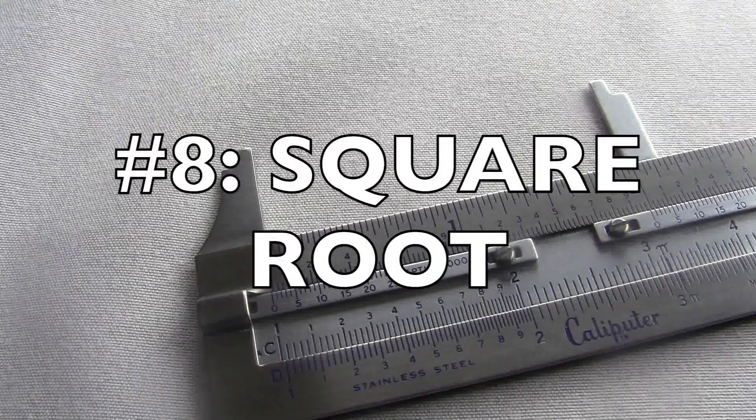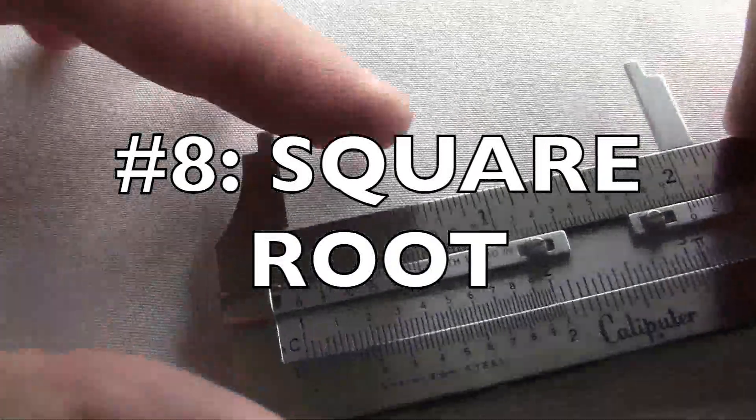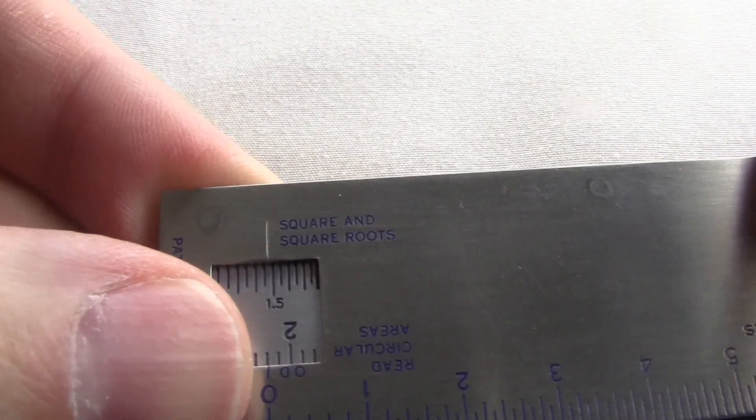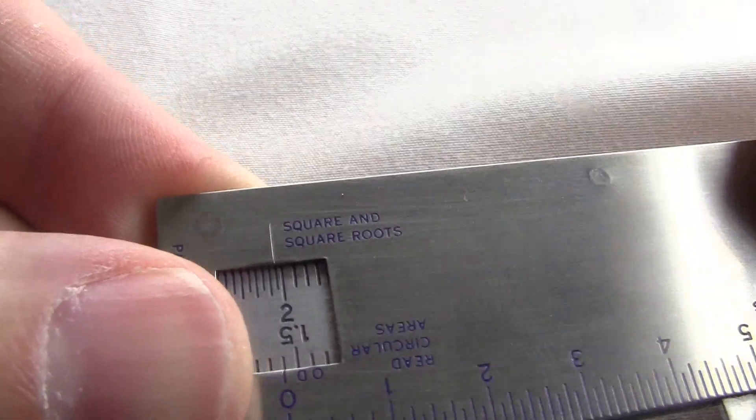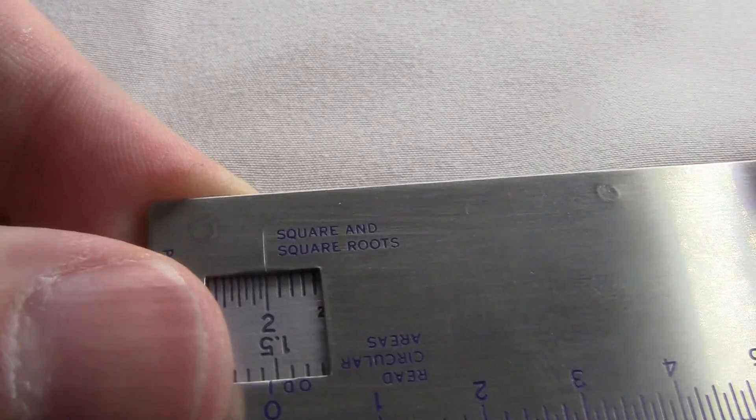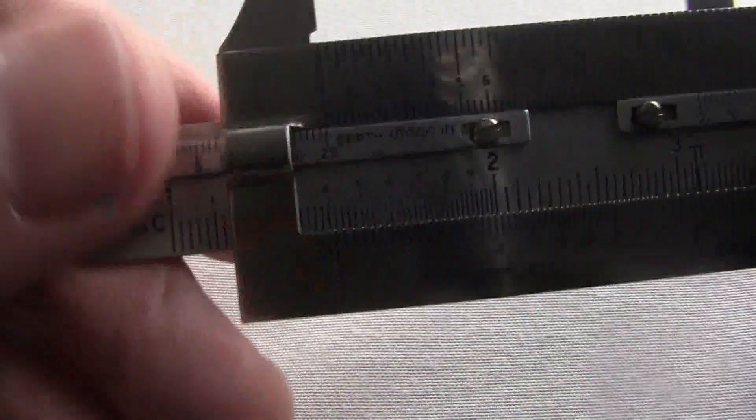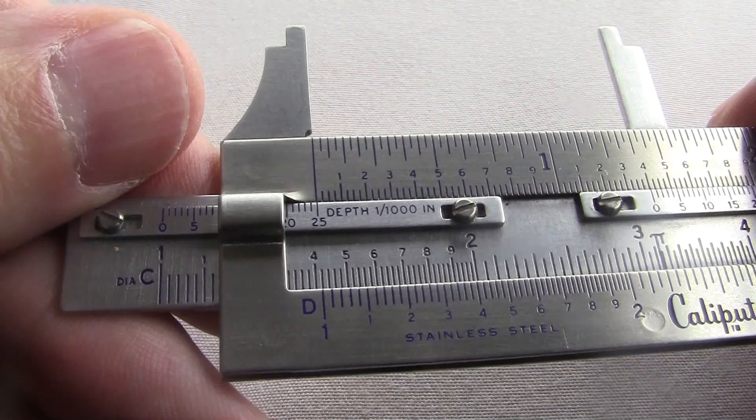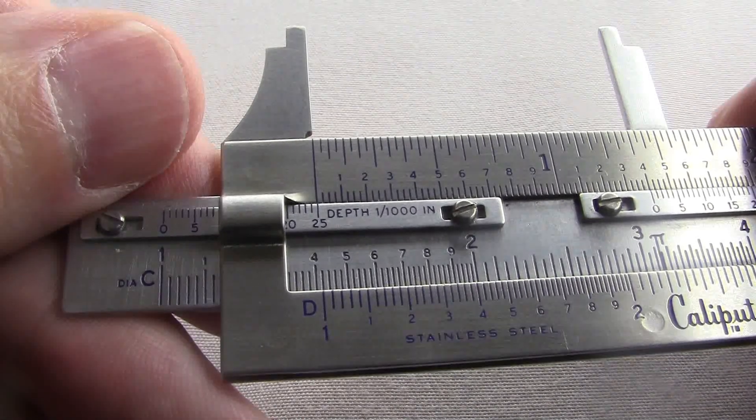Number eight, the square root. For a square root, you just reverse the process like to do the square root of 2. I find a 2 in the square window back here. And then I turn it back around and read the number on the C scale. And that's the square root. So it looks like the square root of 2 says about 1.41, which is pretty good.